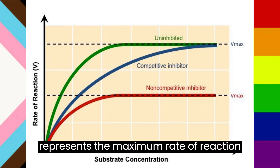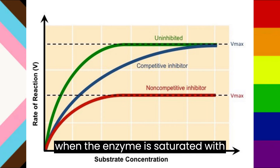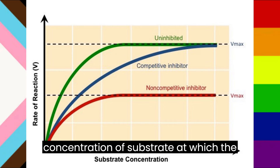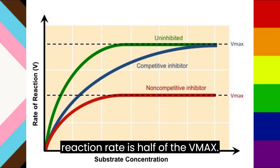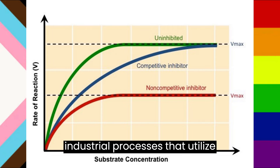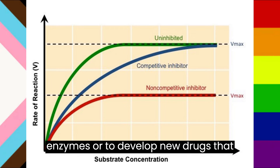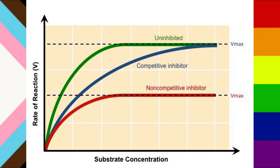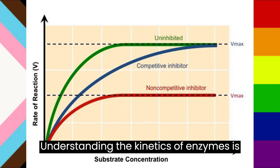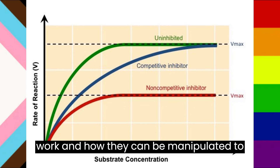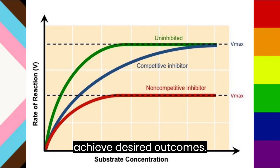The Vmax represents the maximum rate of reaction when the enzyme is saturated with substrate, while the Km represents the concentration of substrate at which the reaction rate is half of the Vmax. Enzyme kinetics can be used to optimize industrial processes that utilize enzymes or to develop new drugs that target specific enzymes. Understanding the kinetics of enzymes is essential for understanding how enzymes work and how they can be manipulated to achieve desired outcomes.